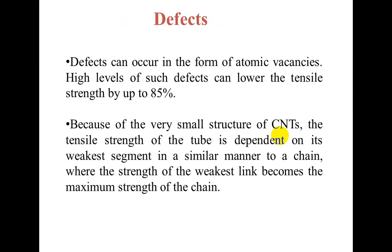Defects — with the properties discussed earlier, CNTs have wide applications, but these applications are limited because of defects. Defects can occur in the form of atomic vacancies. High levels of such defects can lower the tensile strength by up to 85 percent. Because of the very small structure of CNTs, the tensile strength of the tube is dependent on its weakest segment, similar to a chain where the weakest link determines the maximum strength.